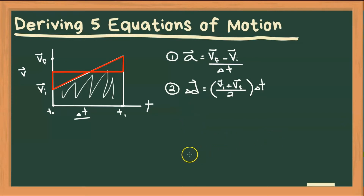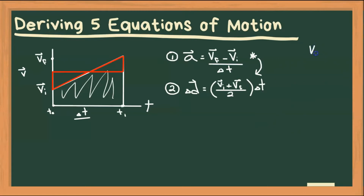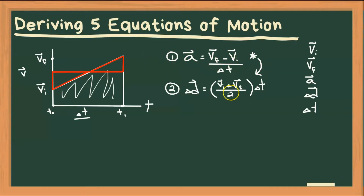Now to find our third, fourth, and fifth equation of motion, what we're going to do is rearrange equation one for different variables, and then substitute those variables into equation two. Now there are five equations of motion for five variables. Our five variables are initial velocity, final velocity, acceleration, displacement, and time. And each equation is missing one of these variables. Notice the first equation here is missing displacement, and in the second equation, there's no acceleration. So we already have these two — let's go ahead and find the equations that are missing the other three.